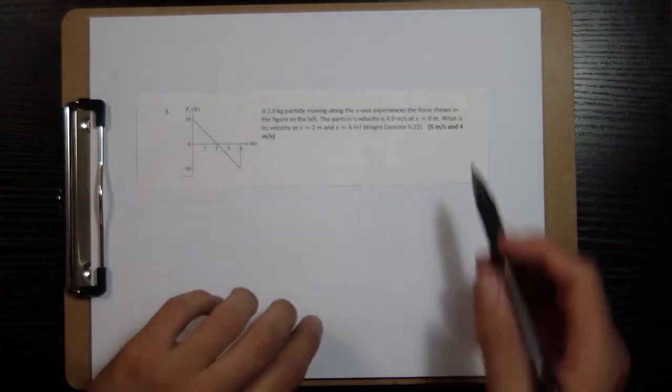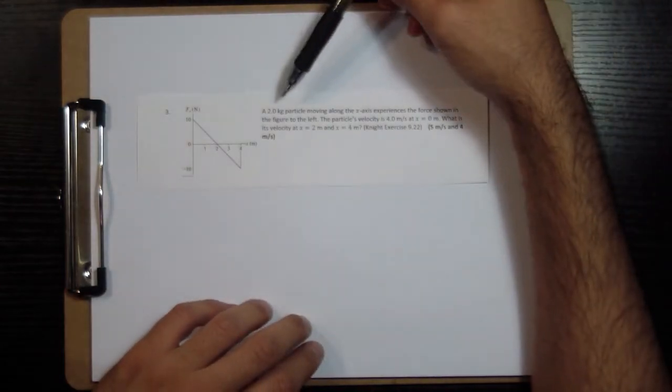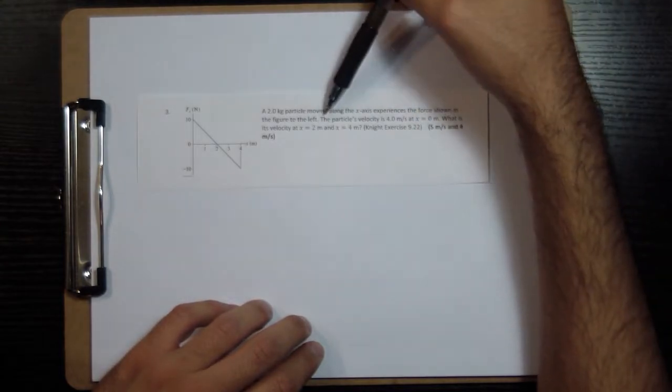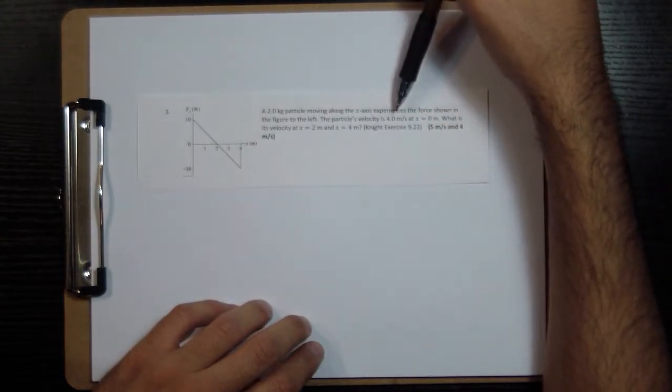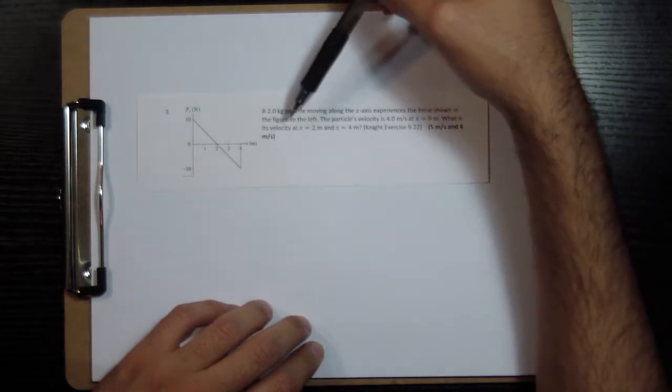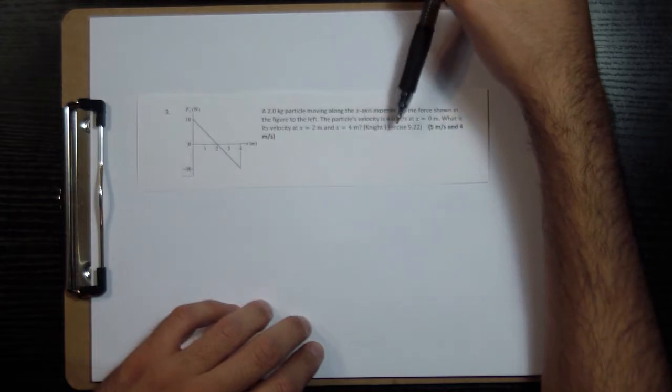Alright, let's look at problem number 3. I'm going to read the problem. A 2kg particle moving along the x-axis experiences the force shown in the figure to the left. The particle's velocity is 4 m per second at x equals 0, and what is its velocity at x equals 2 m and x equals 4 m?